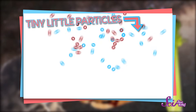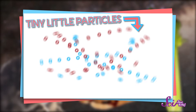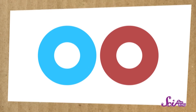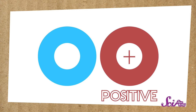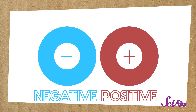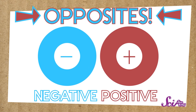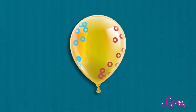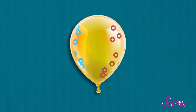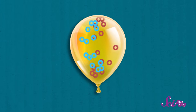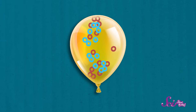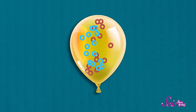These particles are way too small for us to see. And some of these particles are positive, and some of these particles are negative — they're opposites. And guess what? Positive particles and negative particles attract each other — they pull on each other just like the magnets did.